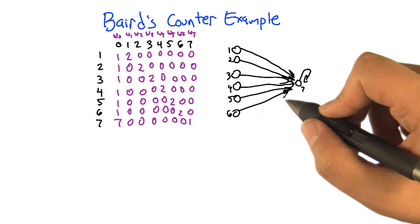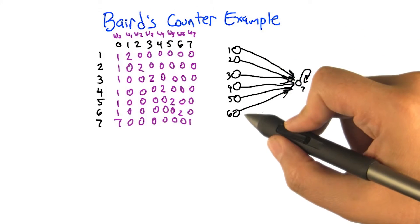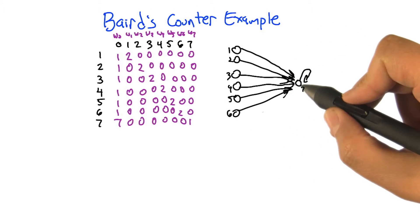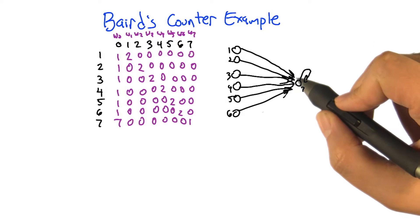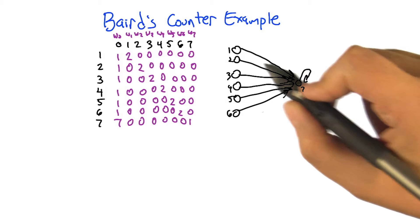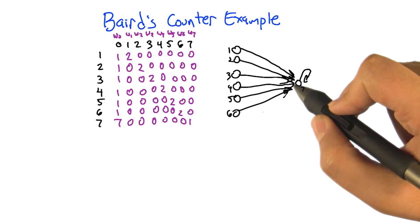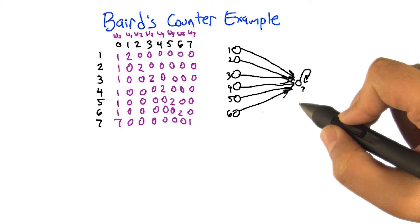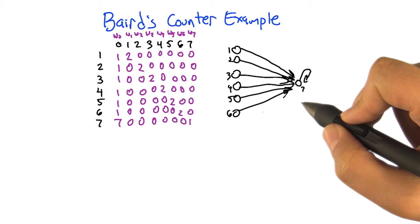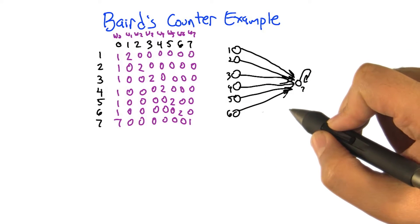Here's a really simple MDP. It's got six states and then a seventh absorbing state. For each state, there's exactly one action. There's no stochasticity. There's no rewards of any kind — they're all zero. So this is a really simple example.